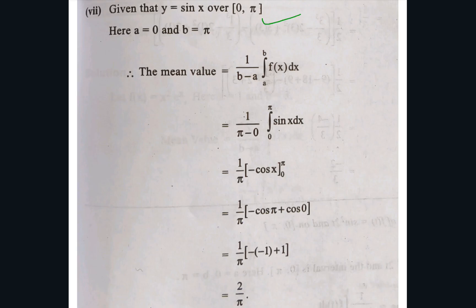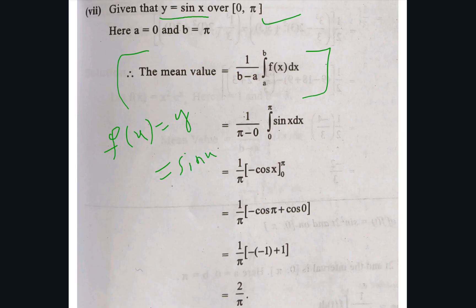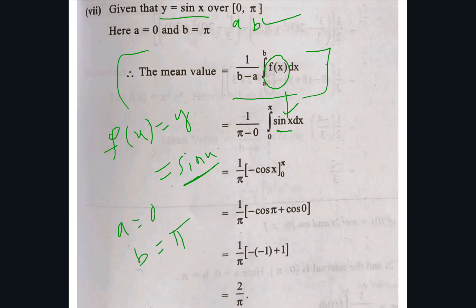Moving to the next problem, also based on mean value. The given function is y = sin(x), so f(x) = sin(x). The mean value formula is 1/(b−a) times the integral from a to b of f(x) dx. In place of f(x) substitute sin(x). The limits are 0 to π, so a = 0 and b = π. Therefore b minus a equals π minus 0 = π.